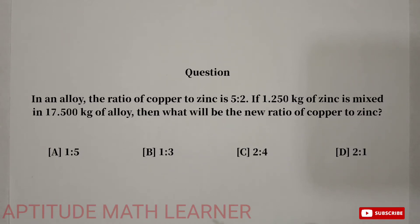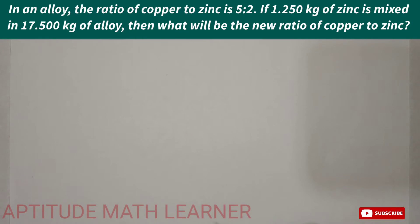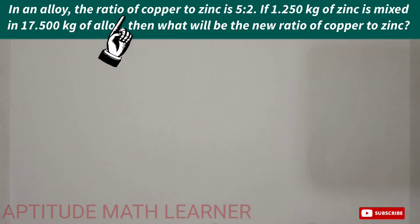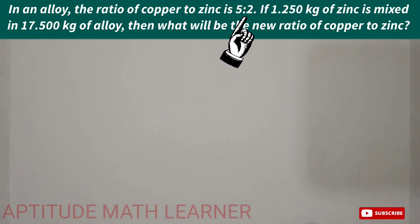We have to find out the new ratio of the alloy. For this, we let copper and zinc be in the ratio 5x and 2x respectively.